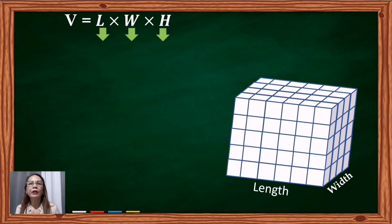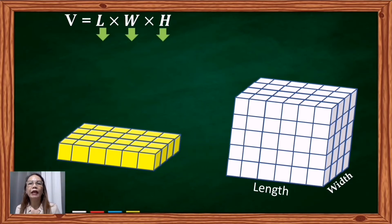If we multiply the area of the base, which is 24 by height of 1, that will give us 24 cubic units which would be how many cubes it would take to make one level of rectangular prism.